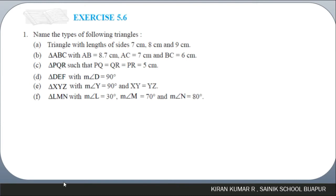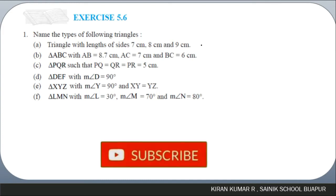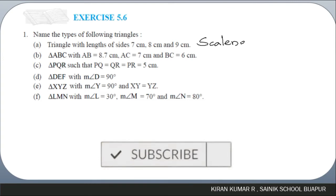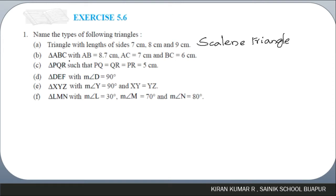Next question is from exercise 5.6: name the type of the following triangles. The first is a triangle with sides 7 cm, 8 cm, and 9 cm — all sides are different, so it forms a scalene triangle. The second, triangle ABC with AB equal to 8 cm, BC equal to 8.7 cm, AC equal to 7 cm — all three sides are different, so it also forms a scalene triangle.